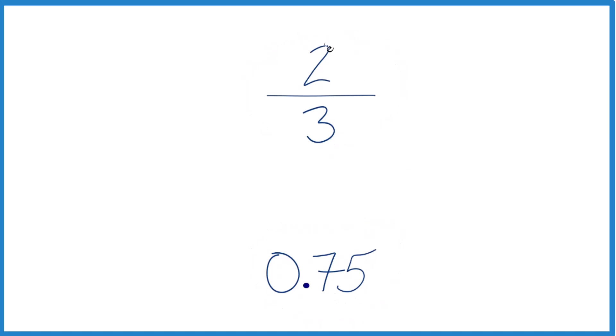You could convert two-thirds to a decimal and compare the decimals, or you can convert 0.75 to a fraction and compare the fractions. Often it's easier to compare decimals, so let's convert two-thirds to a decimal.